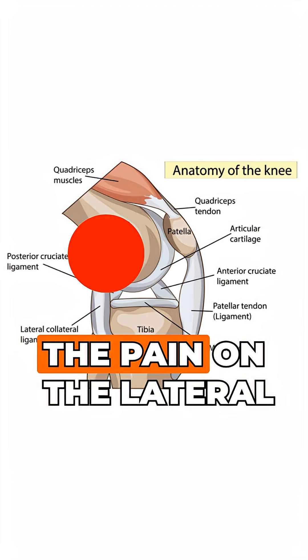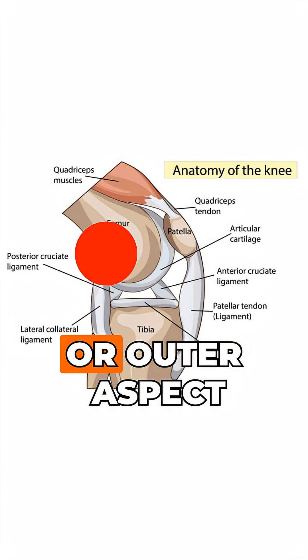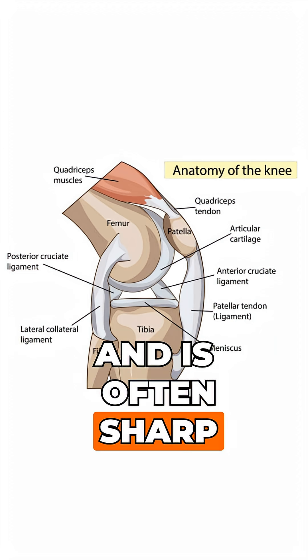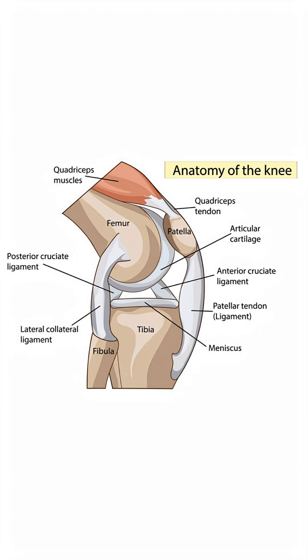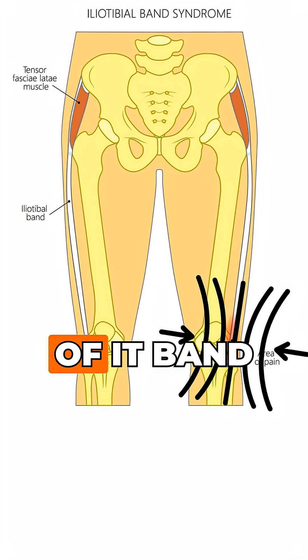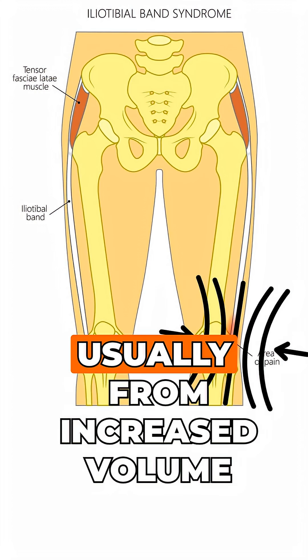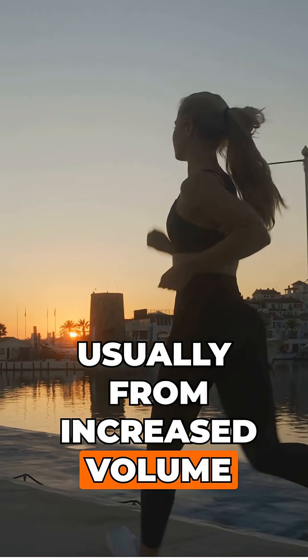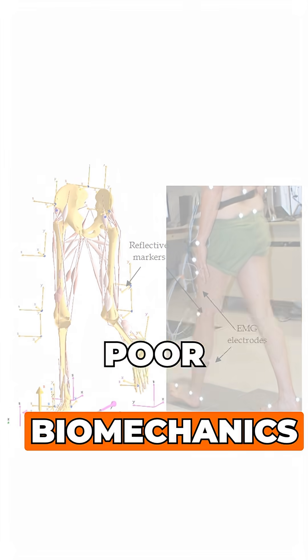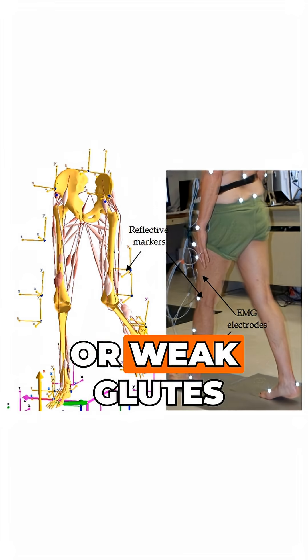IT band syndrome — here the pain is on the lateral or outer aspect of the knee and is often sharp and stabby. It is caused by excessive compression of the IT band, usually from increased volume, gait issues, poor biomechanics, or weak glutes.